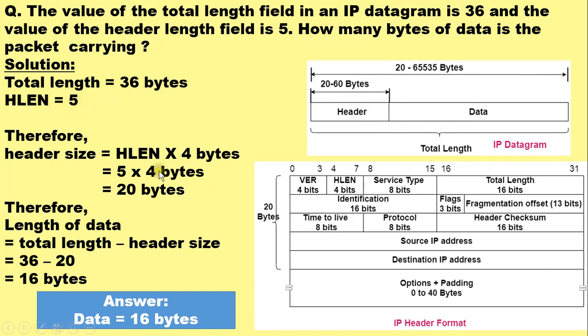HLEN field value is 5, from which we have calculated the header size as 5 multiplied by 4 bytes, that is 20 bytes. And therefore the length of data is equal to total length minus the header size, which equals 36 bytes minus 20 bytes, equals 16 bytes.